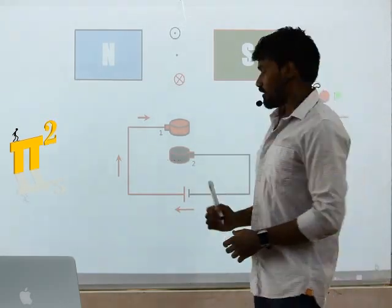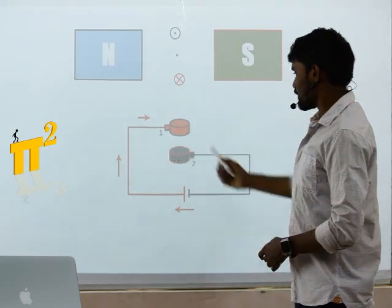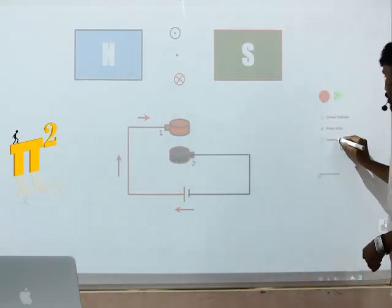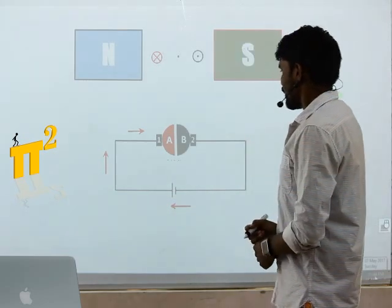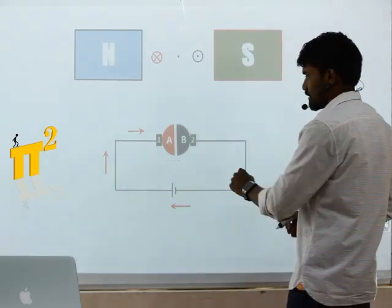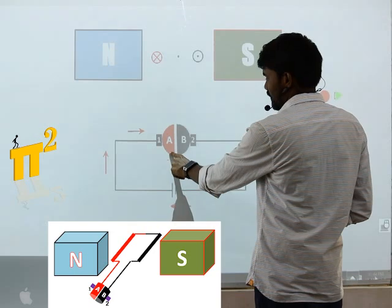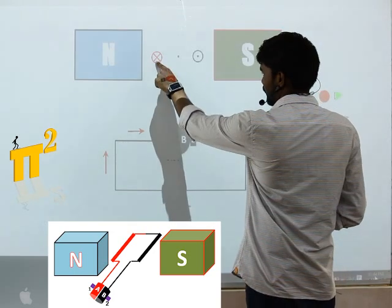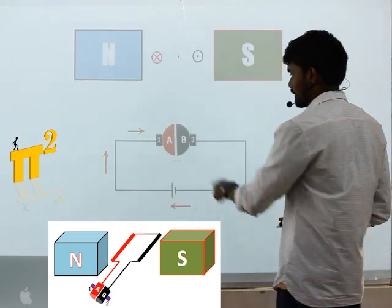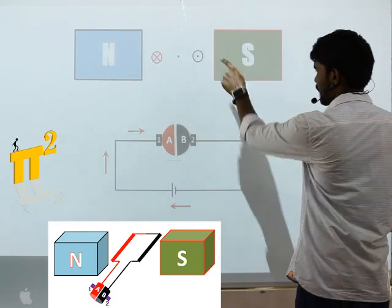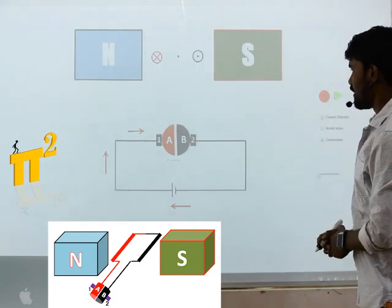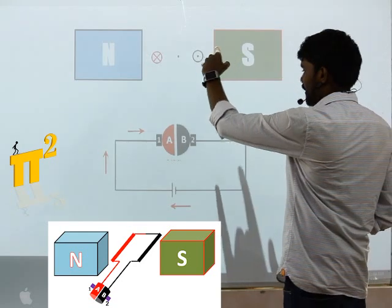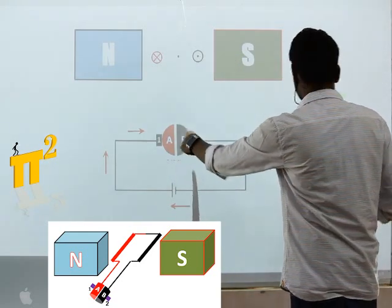So what we'll do - we replace these slip rings with a commutator like in the generator. Now as it is clear, this red part is connected to this red conductor, this black part is connected to this black conductor. Now as this coil is moving, this commutator will also move.